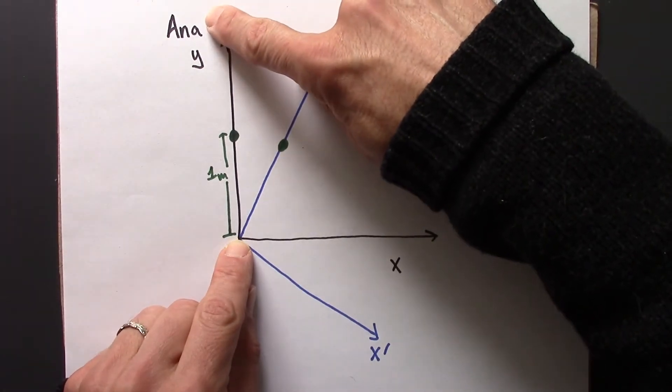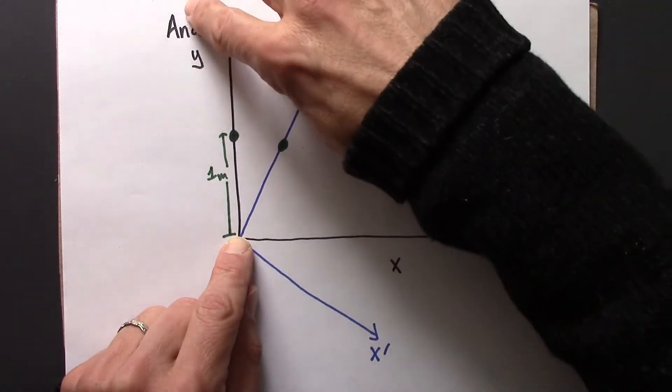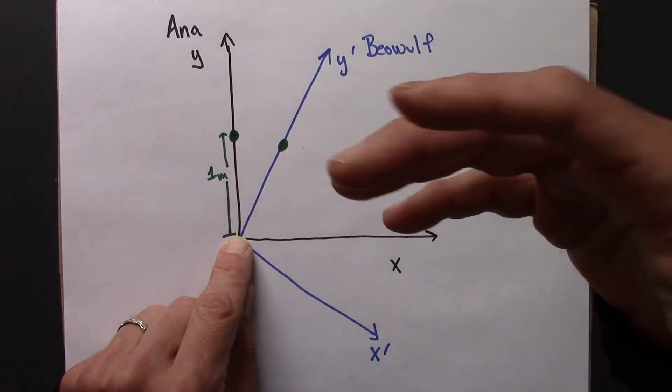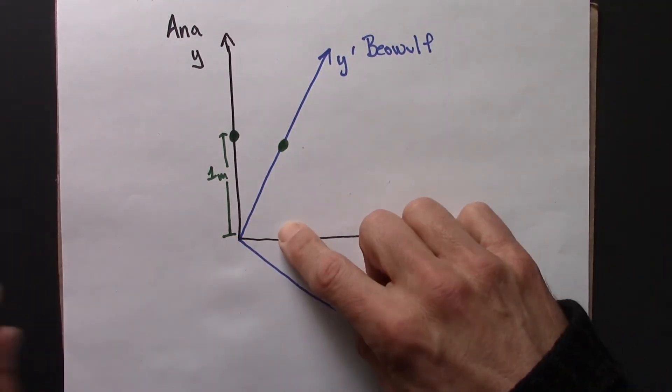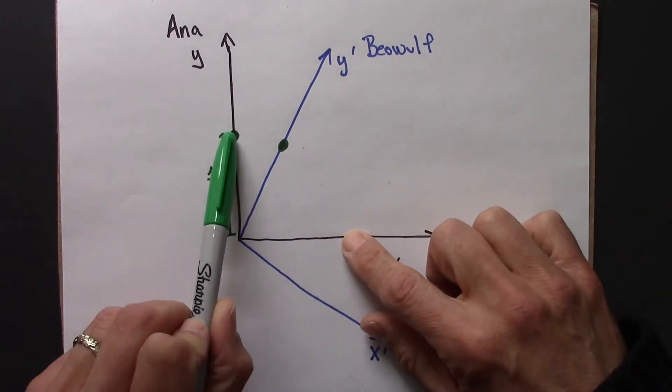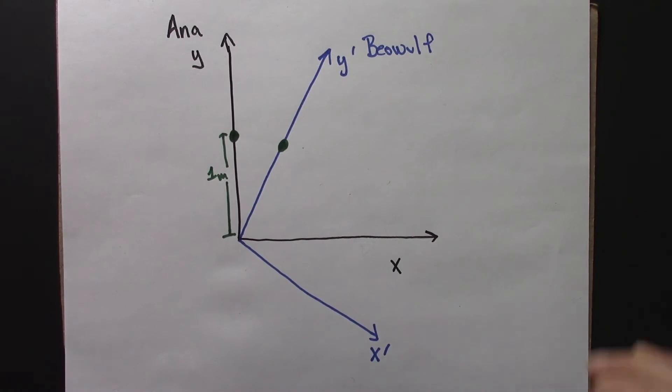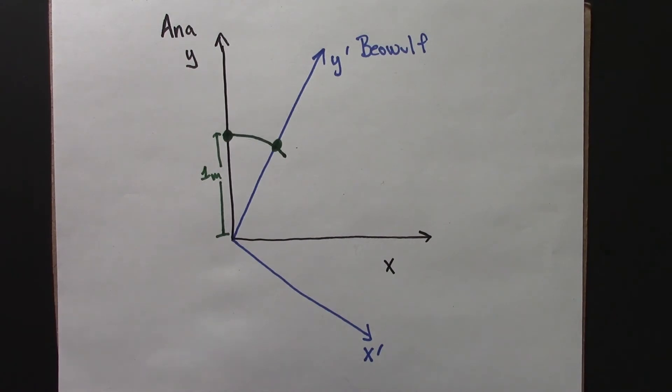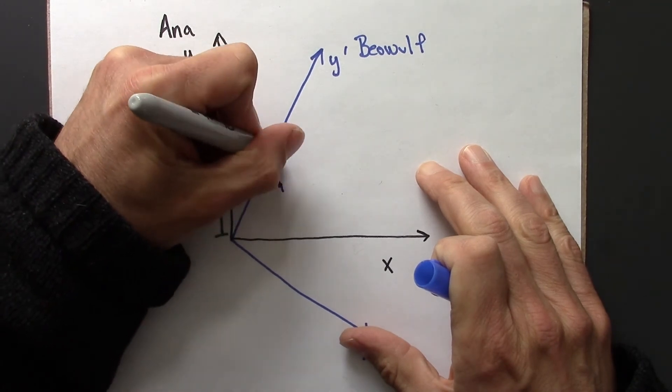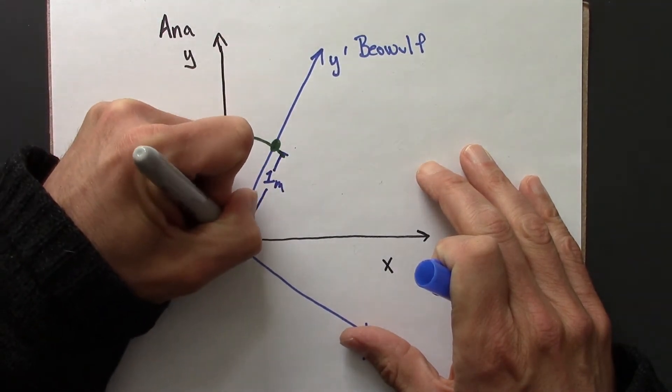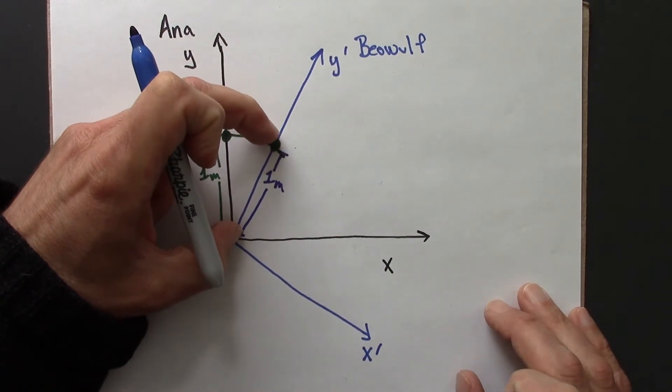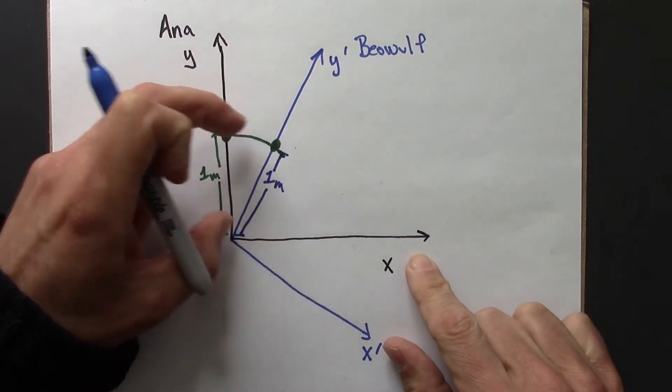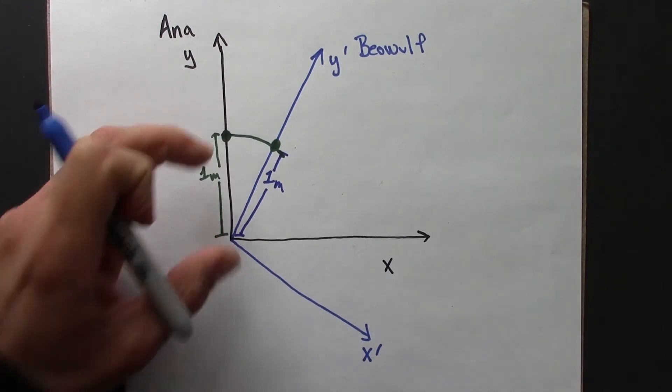The main takeaway for circles was that a circle is a set of all points that's a constant distance from the origin. So what that tells me is that this dot and this dot both lie on a circle of radius one. So this is one meter in Beowulf's coordinate system, and this is one meter in Anna's coordinate system.